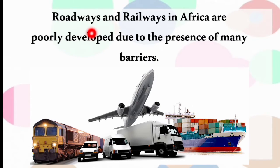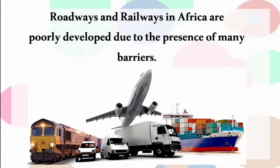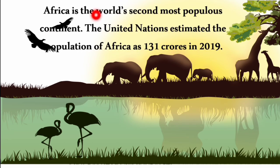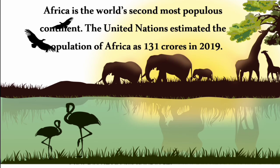Roadways and railways in Africa are poorly developed due to barriers like deserts and dense forests. Africa has trade routes connecting Asia and Australia in the east, Europe in the north and America in the west. Africa is the world's second most populous continent, with the United Nations estimating a population of 1.31 billion in 2019.